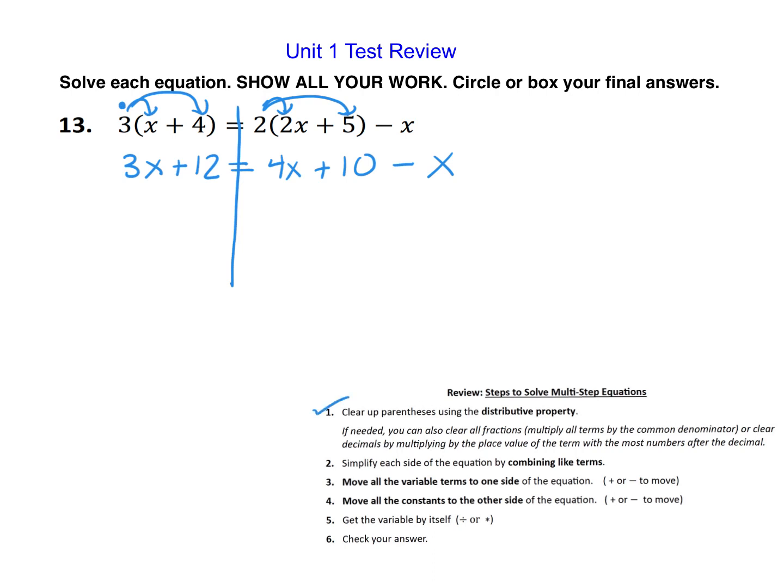We just completed the distributive property. Let's check for like terms. Notice on the right side I have a 4x and I have a minus x. Minus x is like minus 1x. So when we take 4x minus 1x, we get 3x. So we combined like terms.